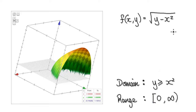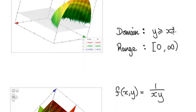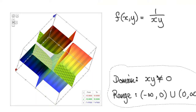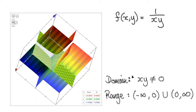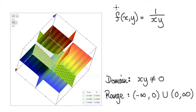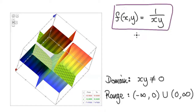Let me give you some more examples. Get a 3D graph plotter and punch this in and it will give you a surface looking like this.